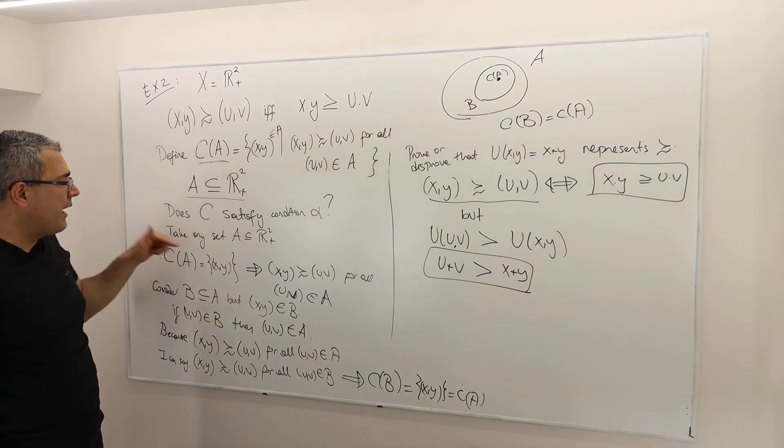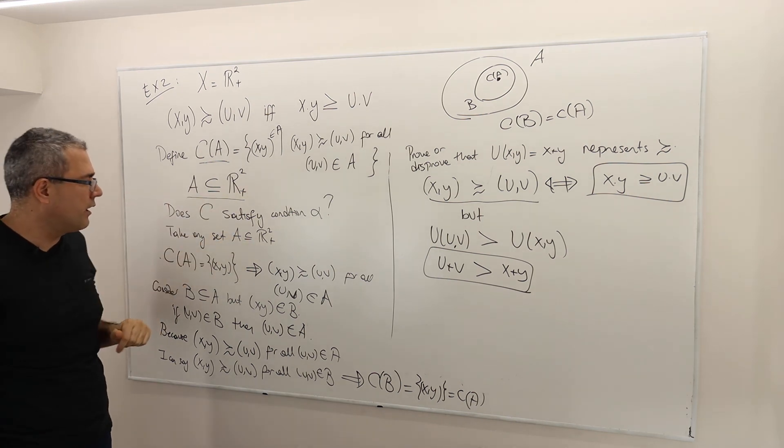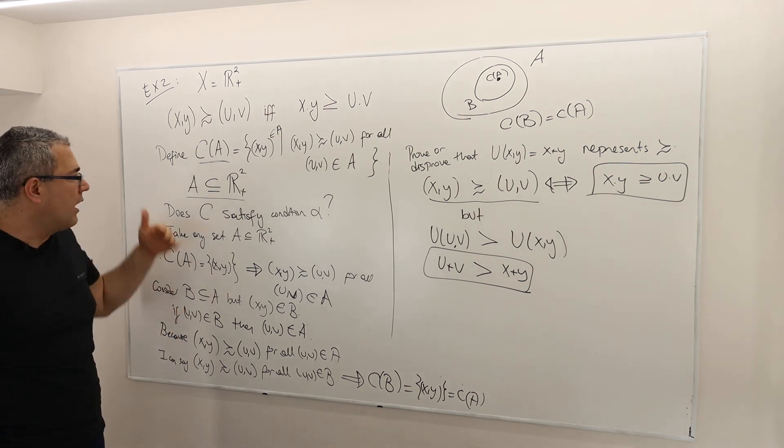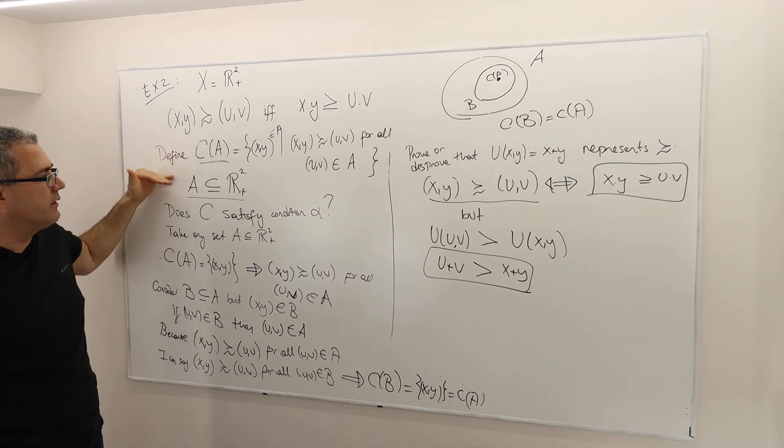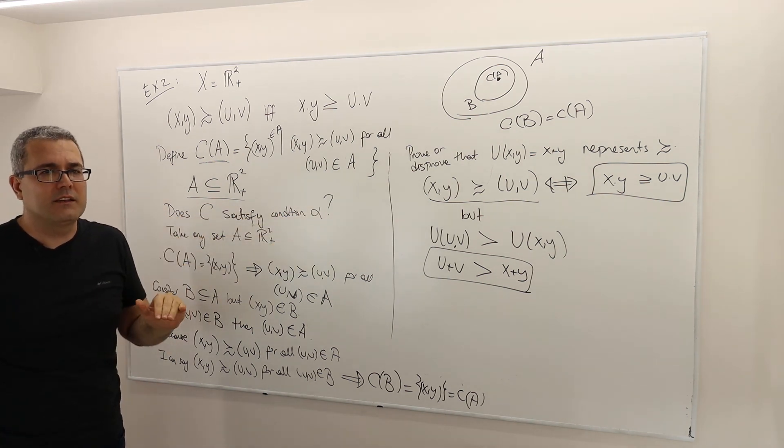Here, A is arbitrary. I did not fix any specific A. It's any subset of R. And B is arbitrary. So, you know what, my choice behavior, this choice behavior, therefore satisfies condition alpha. That's it.